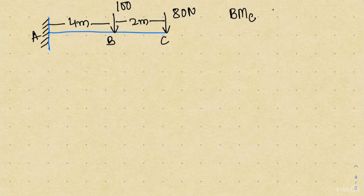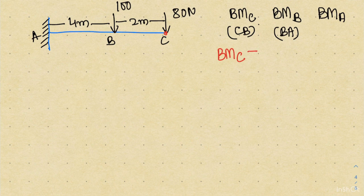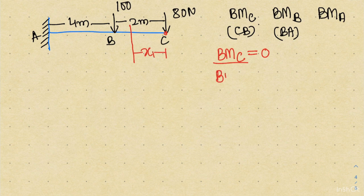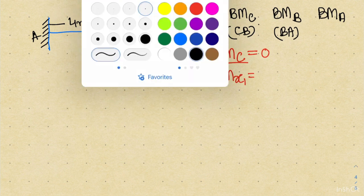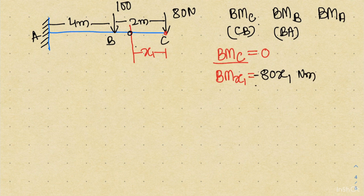I am interested in finding the bending moment at points C, B, and A, as well as between sections C-B and B-A. Conventionally I consider a distance x from the extreme right point and write the equation. The bending moment at point C is zero because the 80 Newton load acts there with zero distance. Considering a distance x1 from C, the bending moment at x1 is minus 80 into x1. The sign is negative because the load acts downward, producing a clockwise moment. This equation is valid up to point B.